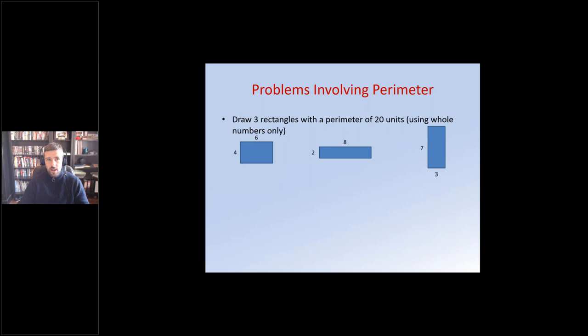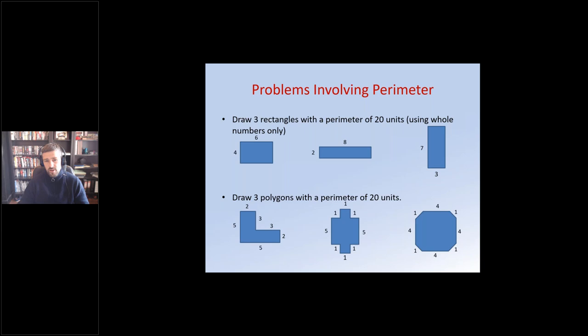An extension task might be: what is the maximum number of rectangles with a perimeter of 20 using whole numbers only? A follow-on task closely related is: draw three polygons with a perimeter of 20. A polygon is a flat-sided shape enclosed by straight lines only, with no limits on the number of sides or angles involved. Students will come up with lots of various options. The question might then be: what is the maximum number of polygons you could draw with a perimeter of 20? Through discussion, they'd see there's really an infinite number of polygons you could draw with such a perimeter.